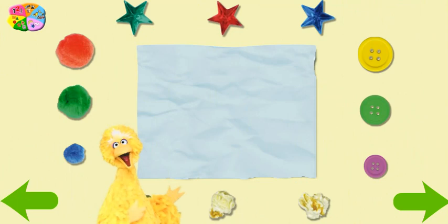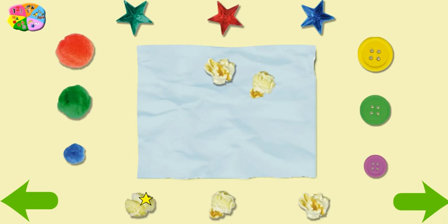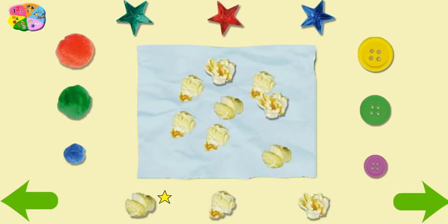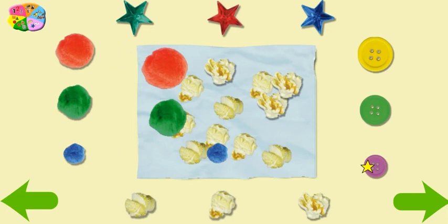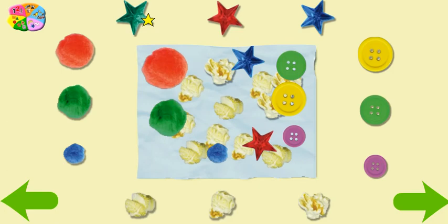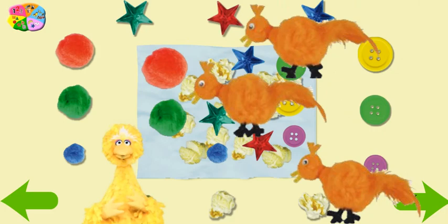Look at all this fun stuff. Hey, you can use it to make a collage. Click on something and then click on the paper to put it in your collage. It's your piece of paper. Now we can make art with different stuff.